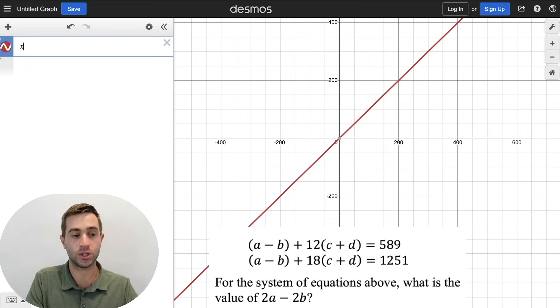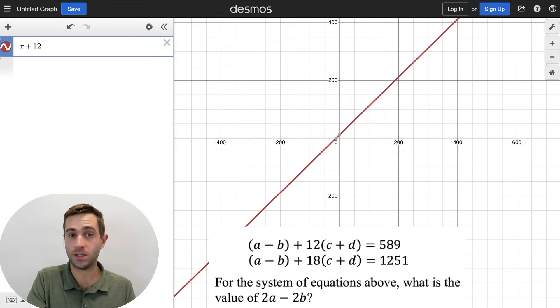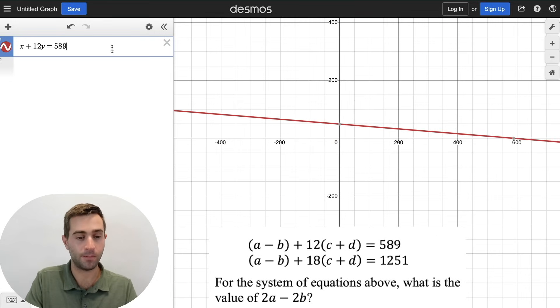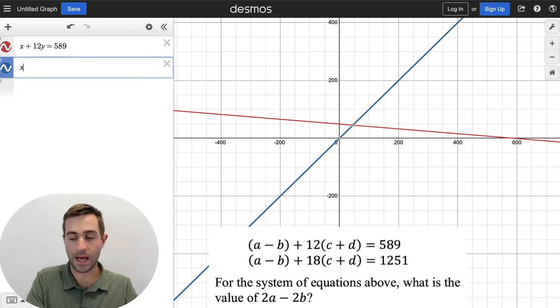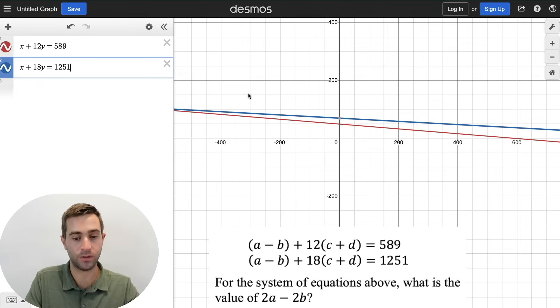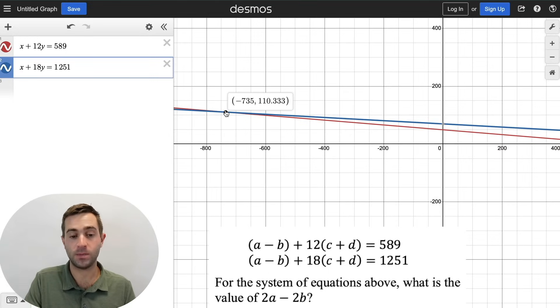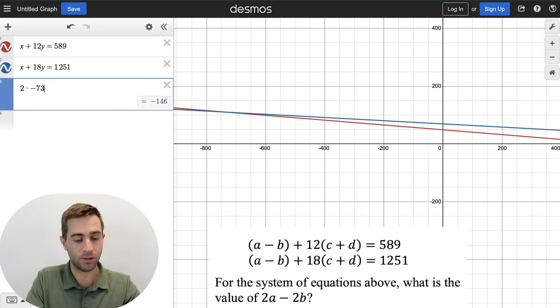So a minus b, we're just going to put in x is a minus b we've decided is equal to x plus 12 times c plus d, we're saying that's y, is equal to 589. And now we're going to have x plus 18y is equal to 1,251. Now we're looking for a minus b, which we defined as x. So we know it's negative 735. Since we're looking for 2a minus 2b, we're simply going to do two times negative 735. And that will give us our correct answer.